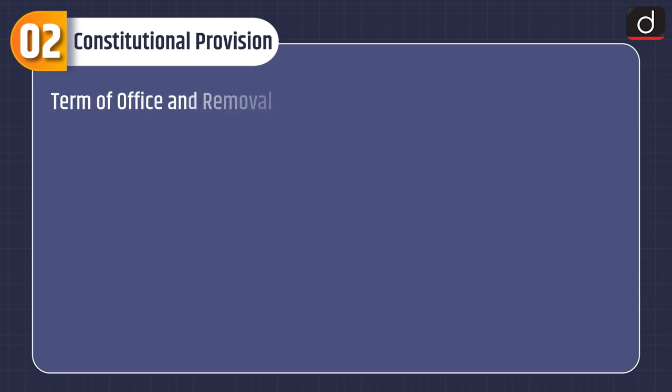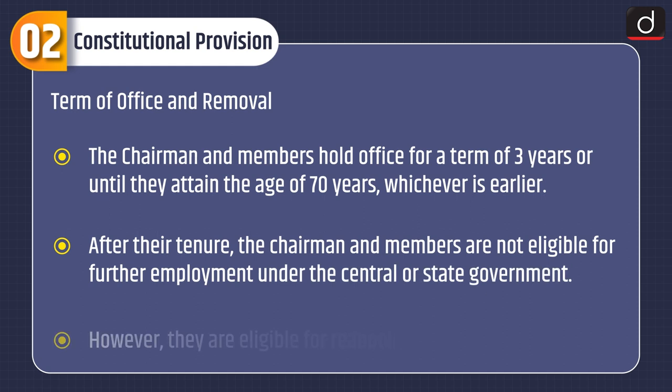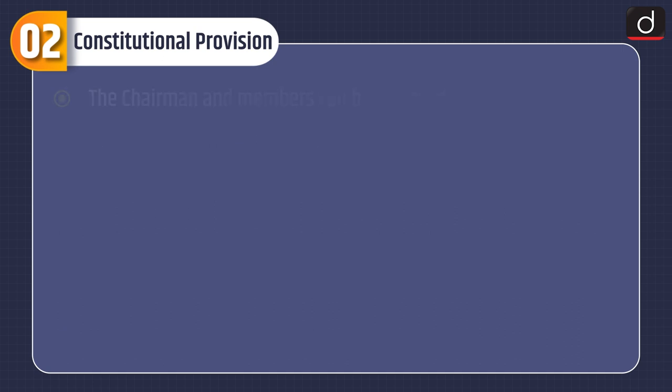Term of Office and Removal: The chairman and members hold office for a term of three years or until they attain the age of 70 years, whichever is earlier. After their tenure, the chairman and members are not eligible for further employment under the central or state government; however, they are eligible for reappointment.